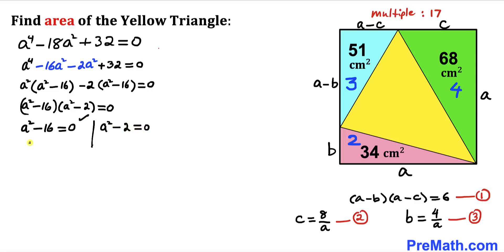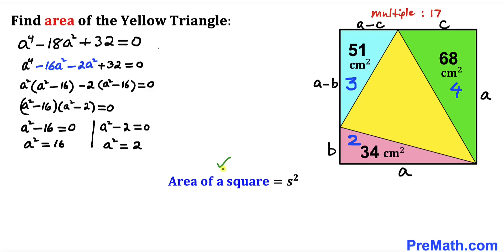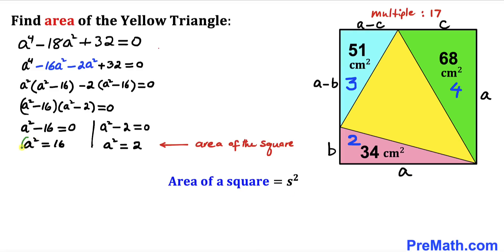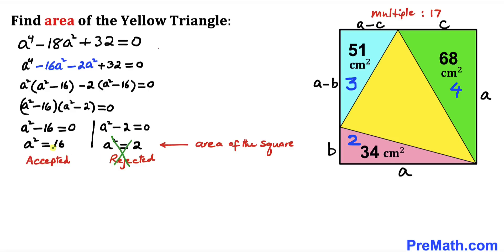From a² − 16 = 0, we get a² = 16. From a² − 2 = 0, we get a² = 2. Recalling that the area of the square equals a², both values represent possible areas. However, when a² = 2, the square's area would be 2, which is smaller than the individual triangle areas we already know. So we reject a² = 2 and accept that the area of the square equals 16 cm².